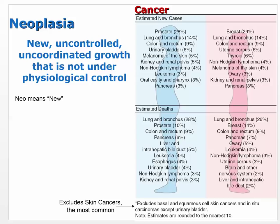Cancer is when cells grow unchecked, out of control, and just take over. They can be benign or malignant, and we'll get into what each of those means. Looking at the epidemiology, you can see how cancer affects people.